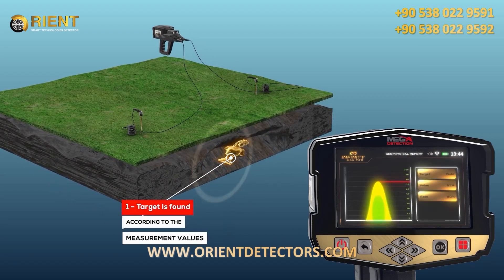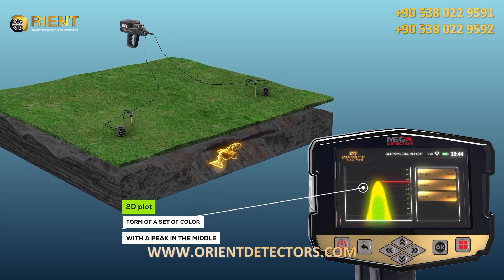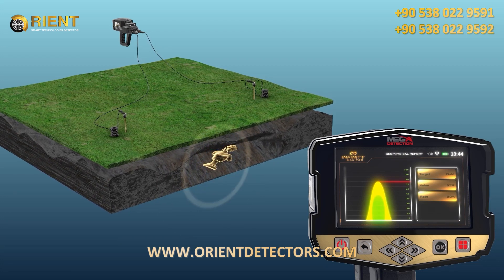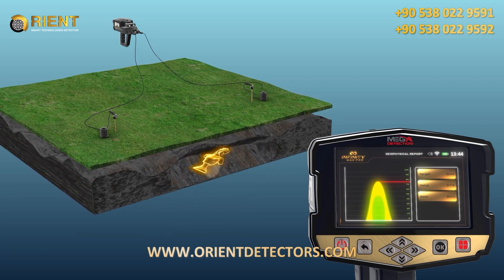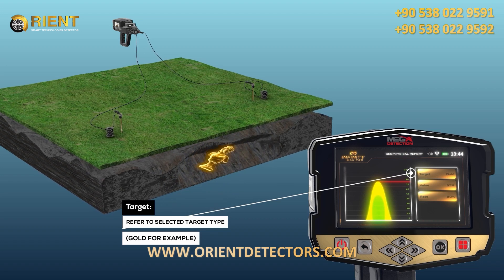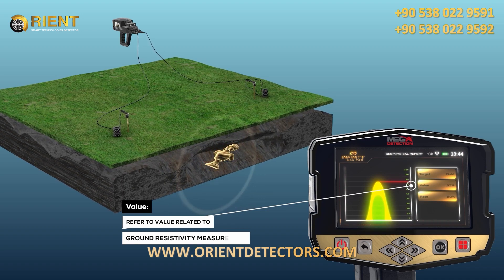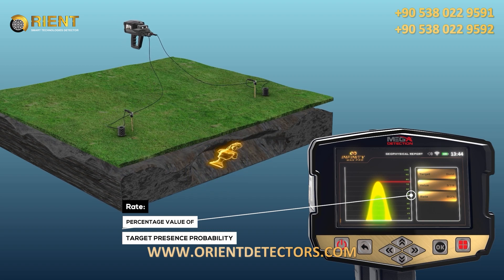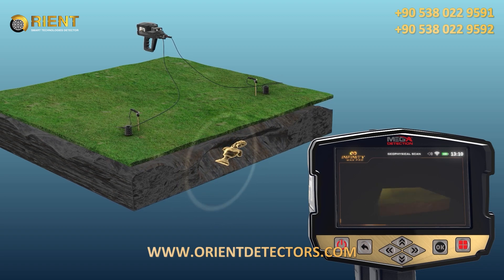Target Found. The results screen displays a 2D plot in the form of a set of color-changing ellipsoid curves, from green to red, with a peak in the middle of the graph, corresponding to a percentage value on the vertical axis representing the probability of the target's presence in the area. To the right of the 2D plot are information boxes including: 1. Target — the selected target type, e.g., gold. 2. Value — the ground resistivity measurement value. 3. Rate — the percentage value of target presence probability, corresponding to the apex or peak of the upper ellipse on the curves.